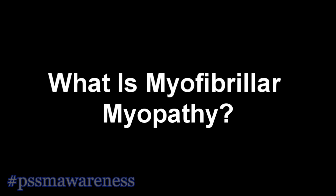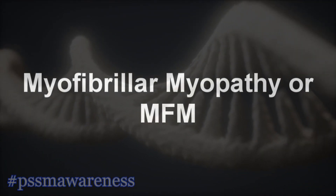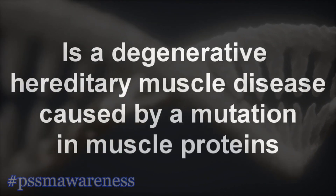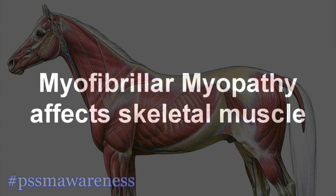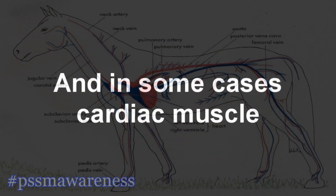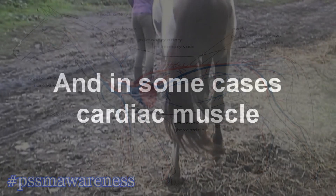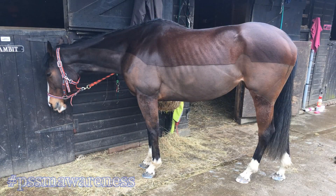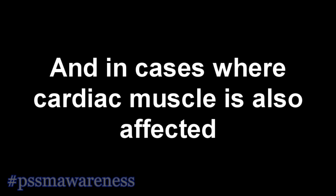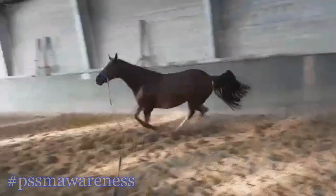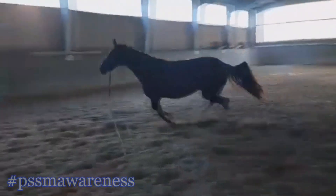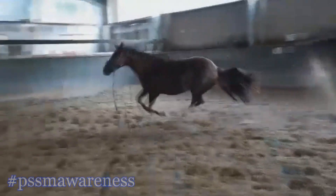What is myofibrillomyopathy? Myofibrillomyopathy, or MFM, is a degenerative hereditary muscle disease caused by a mutation in muscle proteins. Myofibrillomyopathy affects skeletal muscle and in some cases cardiac muscle. It causes muscle weakness, loss of muscle mass, and in cases where cardiac muscle is also affected, respiratory problems. Although there is no current evidence to show PSSM2 causes respiratory problems in horses, there are a number of PSSM2 horses with respiratory issues.